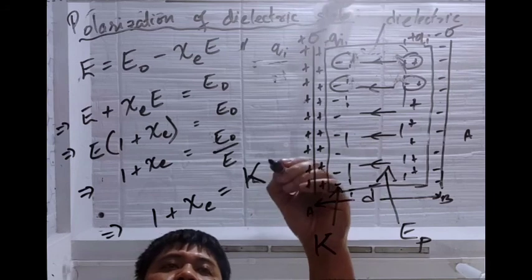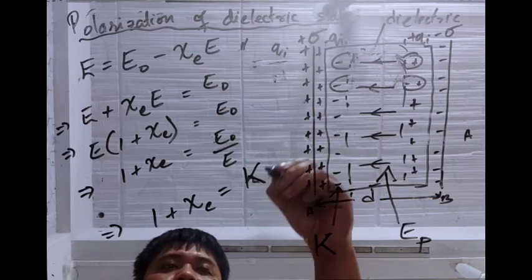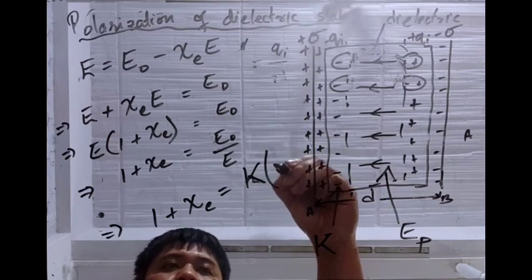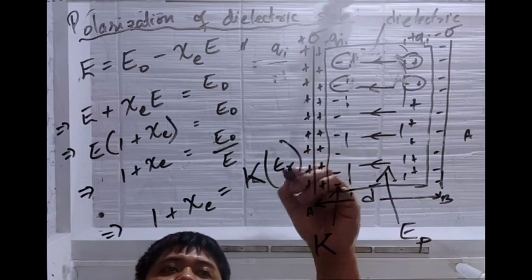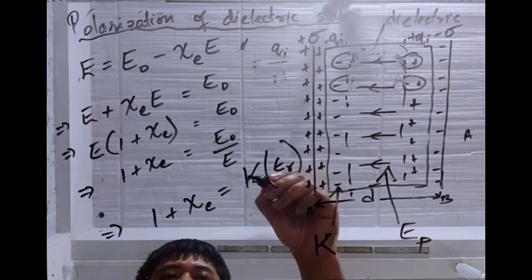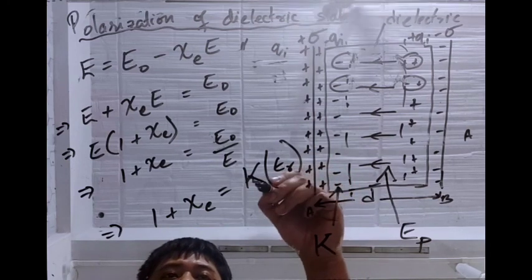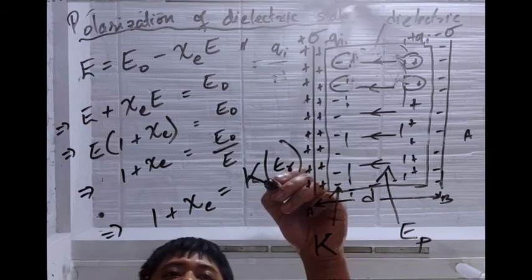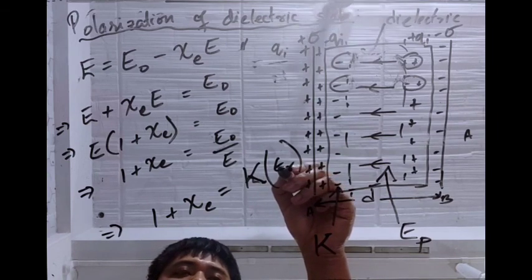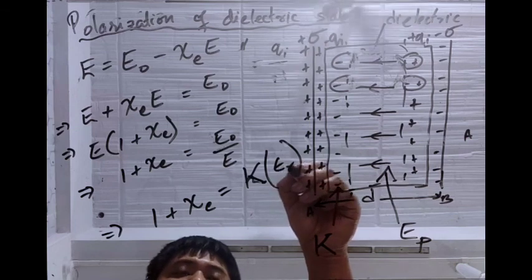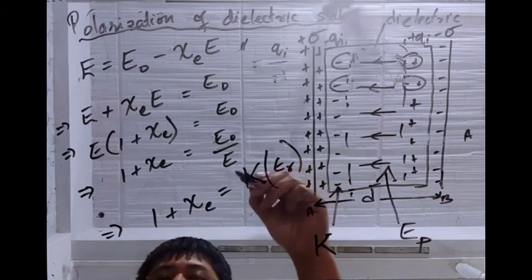So we have proved that 1 + chi_E equals the dielectric constant kappa. It is also denoted as epsilon_R, the relative permittivity. They are the same — kappa (dielectric constant) and epsilon_R (relative permittivity).